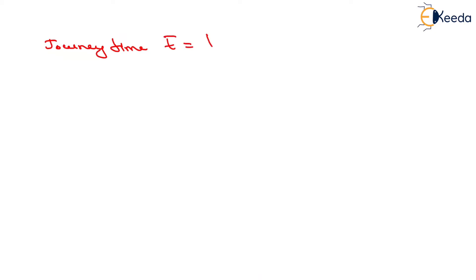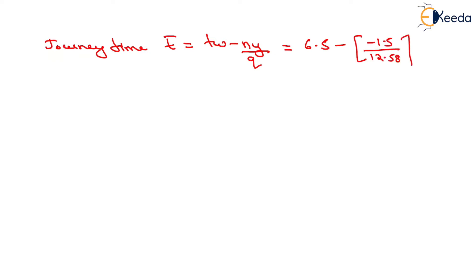Now we have to determine the journey time. Journey time T-bar will be equals to TW minus NY upon Q. TW is 6.5, NY is minus 1.5, and Q is 12.58. On solving this, we will have journey time equals to 6.62 minutes, which is the journey time T-bar.